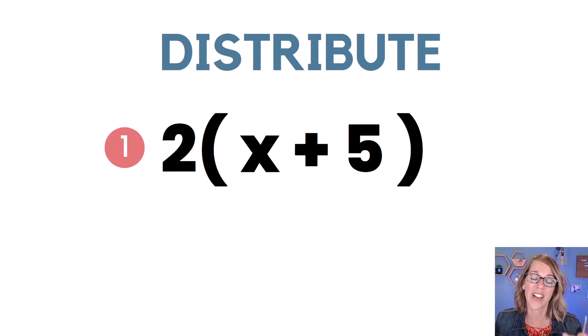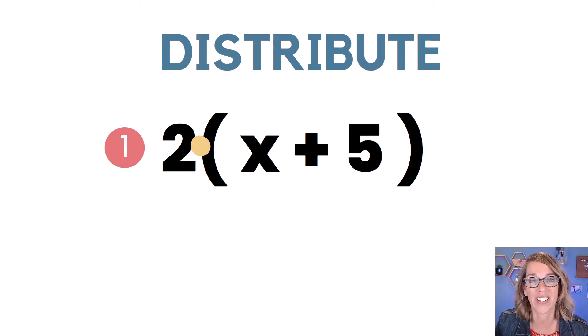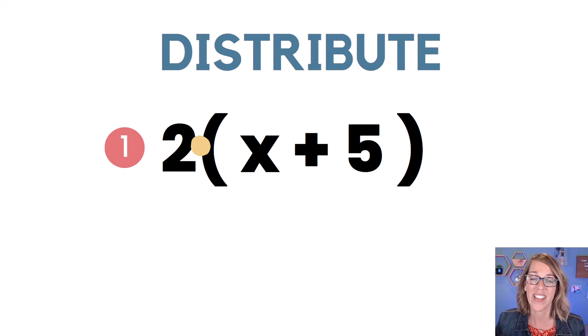So in this first example, I've got two on the outside of the parentheses and that really means that I'm multiplying. So it's two times that quantity x plus five.